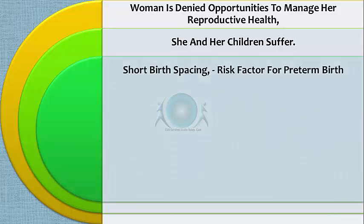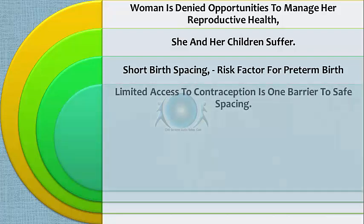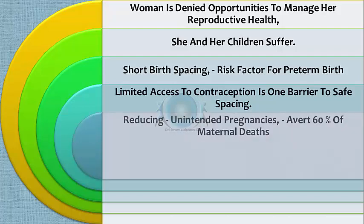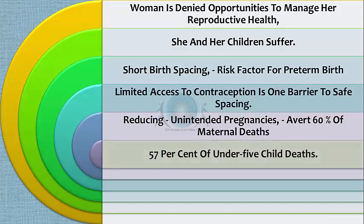When a woman is denied opportunities to manage her reproductive health, she and her children suffer. Short birth spacing is a risk factor for preterm birth, and limited access to contraception is the biggest barrier to safe child spacing. If women who want to avoid pregnancy had access to contraception, unintended pregnancies could drop by 70%. This in turn could avoid 60% of maternal deaths and 57% of under-five child deaths.